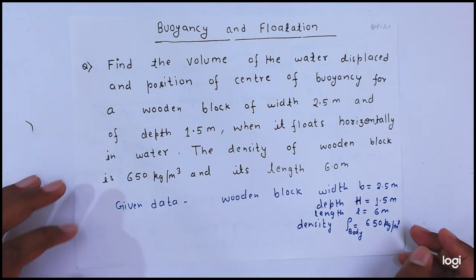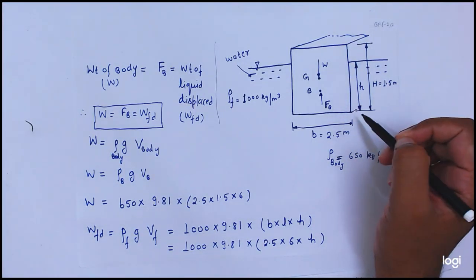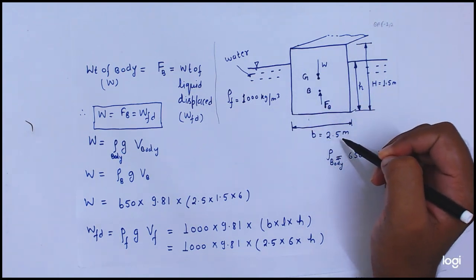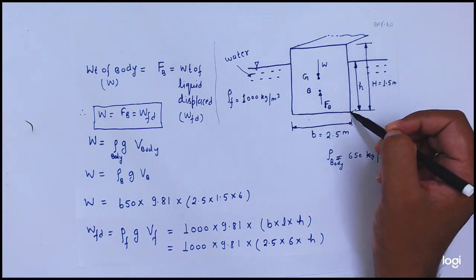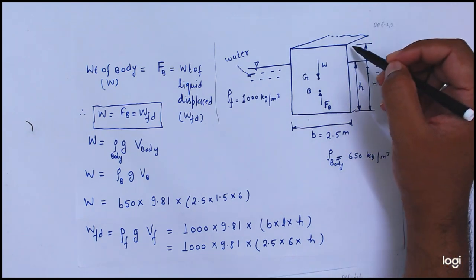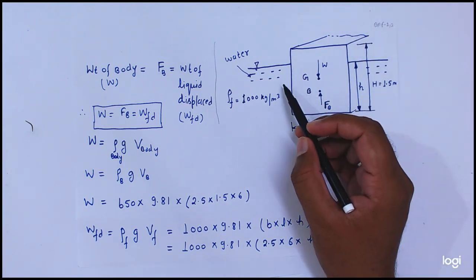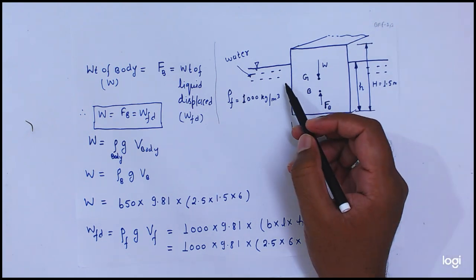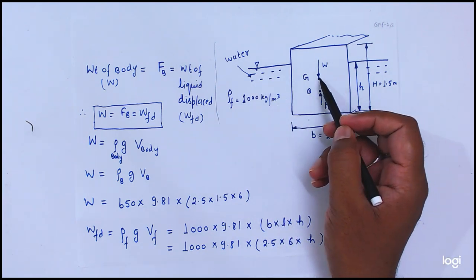Now you see here, the wooden block looks like this. Its width is equal to 2.5 meter, its depth capital H is equal to 1.5 meter, and its length in this direction is equal to 6 meter. The density of this body is equal to 650 kg per meter cube, and it is in water, so water density is equal to 1000 kg per meter cube.